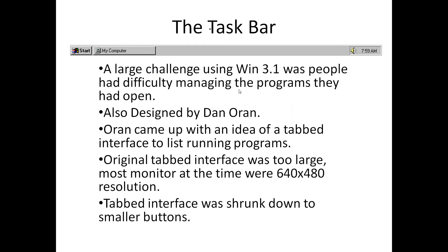Another change that came along was the taskbar. It was a pretty large challenge using Windows 3.1 — people had difficulty managing the programs they had open. You'd navigate through folders to find a program, open it, and if you minimized it, it didn't shrink to a taskbar. It just sat on the desktop, likely hidden behind a dozen windows. People would eventually just open another copy of the same program and run out of memory. It wasn't stable, and it was a very inefficient way of doing things.